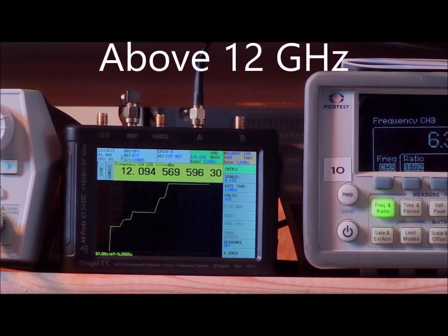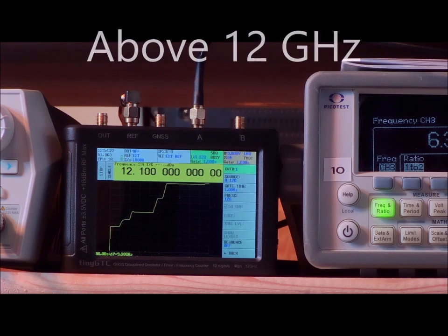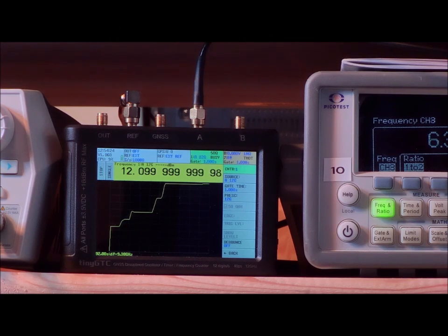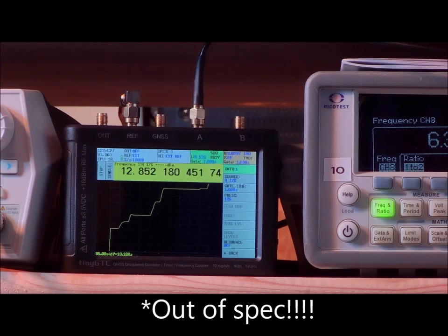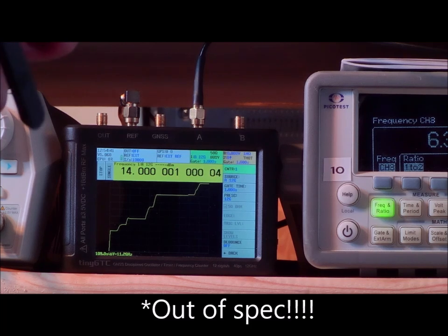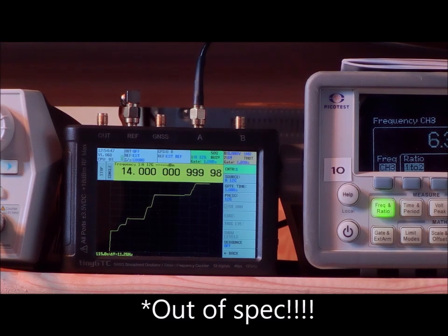All input frequencies above 12 GHz are more than the spec formally approves, but let's see what is still possible. We go to 14 GHz. Small deviation, but this is in the signal generator. The counter in the frequency resolution of the signal generator doesn't allow you to set exactly 14 GHz, so the TinyGTC is measuring correctly the output frequency.